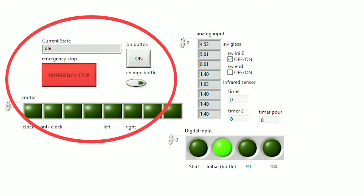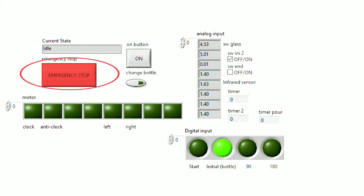On the left-hand side in the upper part, there are current state, red emergency button, change bottle button, and start button.